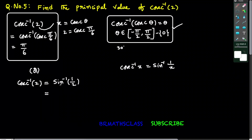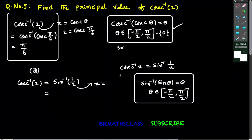Now you observe this is of the form sin inverse of x. I want to write this x in the form of sin theta so that I can use the formula sin inverse of sin theta. From the properties of inverse trigonometric functions, we learn that sin inverse of sin theta is theta. This formula holds good when theta belongs to the closed interval minus pi by 2 to pi by 2.